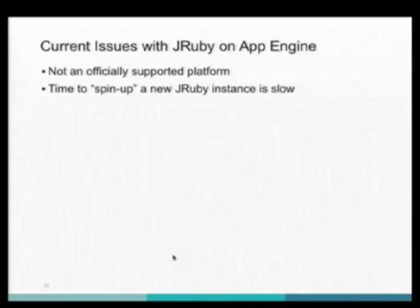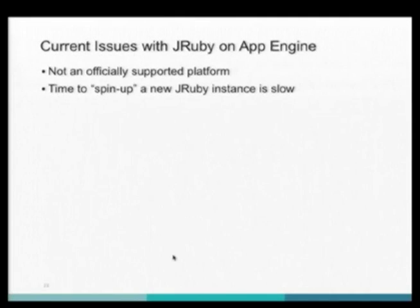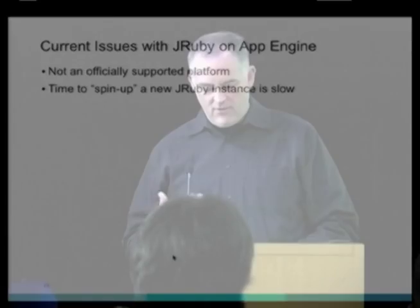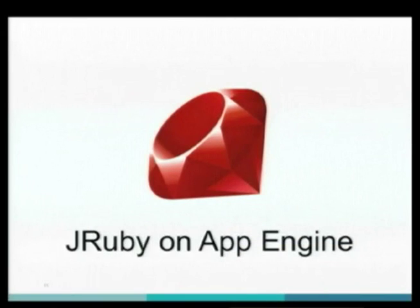There are some issues with JRuby on App Engine. It's not officially supported, but people like myself at Google and community contributors all contribute on code.google.com — anyone can find a bug and fix it or submit a patch. Another issue is that the time to spin up a new JRuby instance is currently slow, but there are workarounds. For example, you can leave complex Ruby code as-is, and create a Java or Duby servlet to handle high-traffic read-only views, giving you strategies for making it faster.